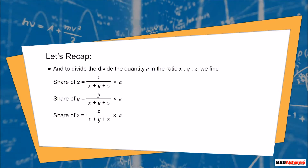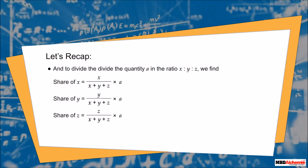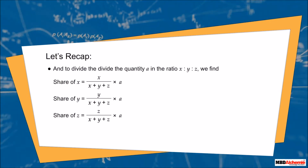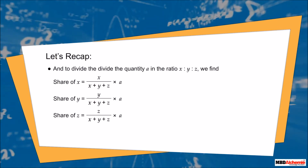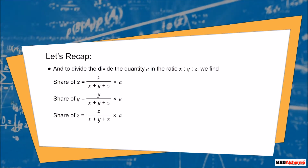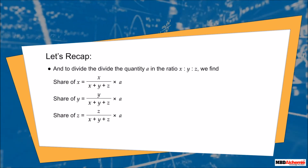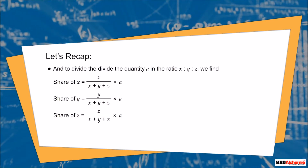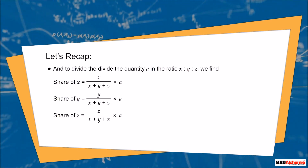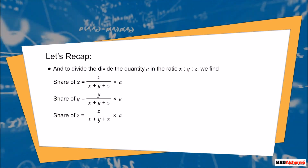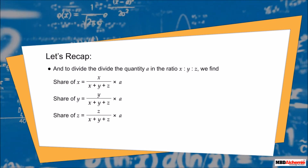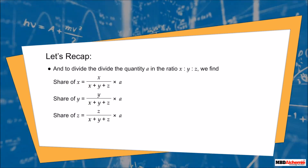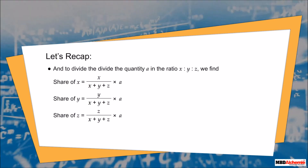To divide quantity A in the ratio x to y to z: the share of x is equal to x divided by (x + y + z), multiplied by A. The share of y is equal to y divided by (x + y + z), multiplied by A. The share of z is equal to z divided by (x + y + z), multiplied by A.